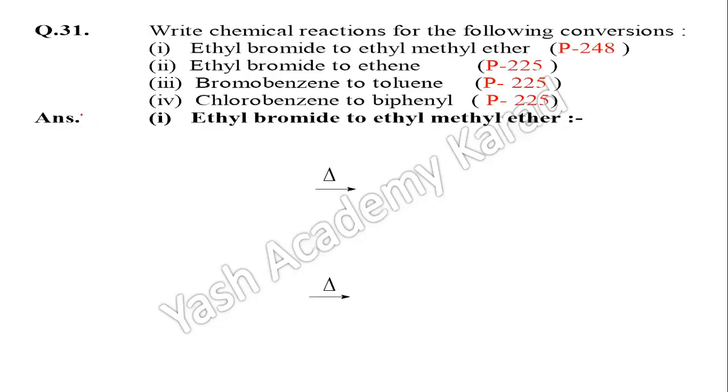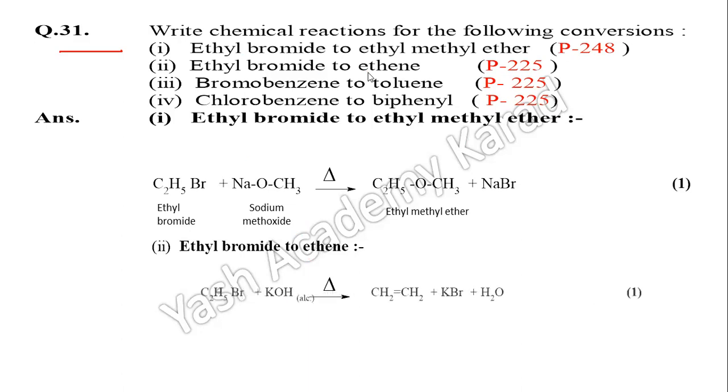This is the last question of Section D, question 31: Write chemical reactions for the following conversions. Organic topic: ethyl bromide to ethyl methyl ether, ethyl bromide to ethene. C₂H₅Br, ethyl bromide, reacts with alcoholic potassium hydroxide. This condition is very important - alcoholic KOH, not aqueous, otherwise substitution reaction. There is dehydrohalogenation, formation of alkene. One mark.